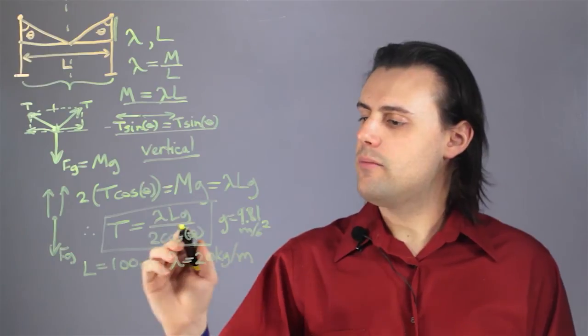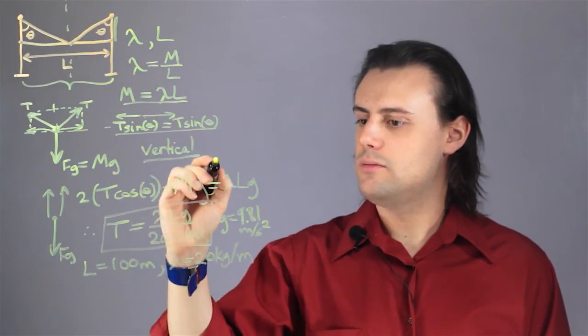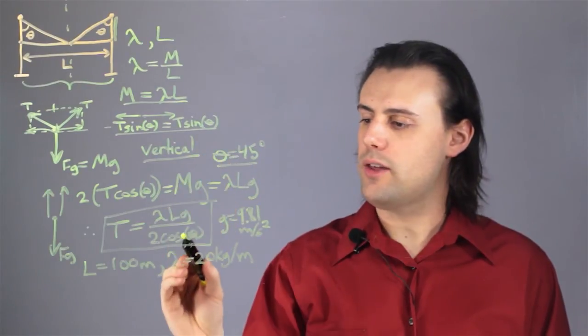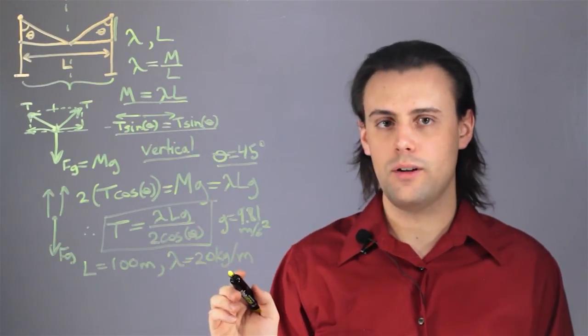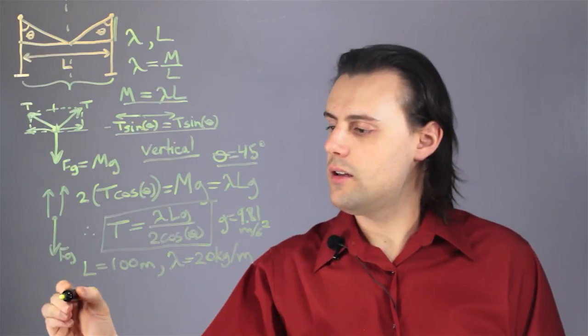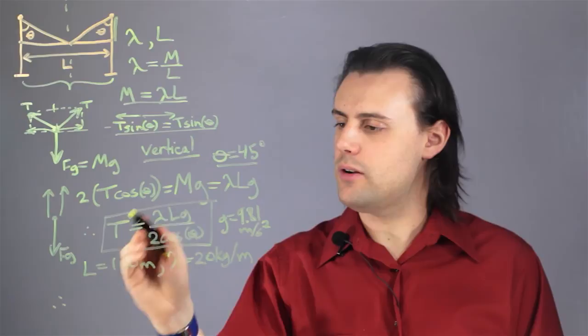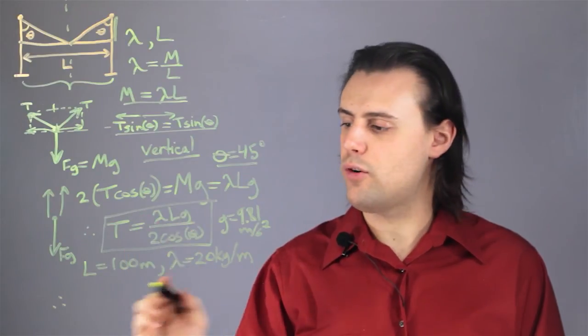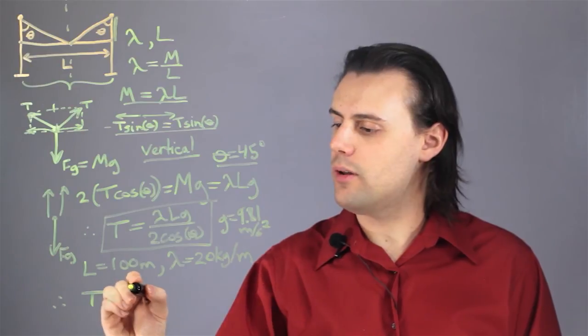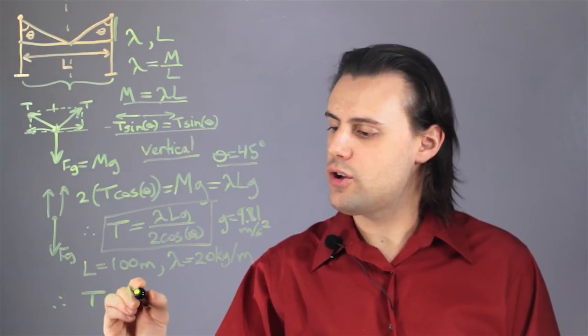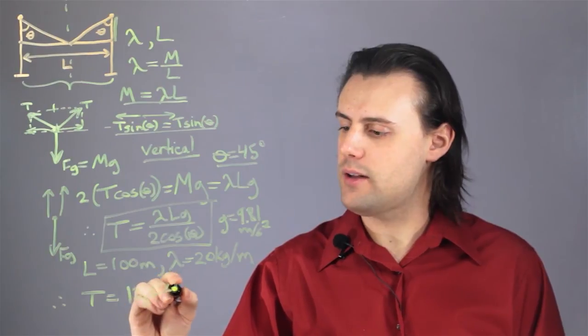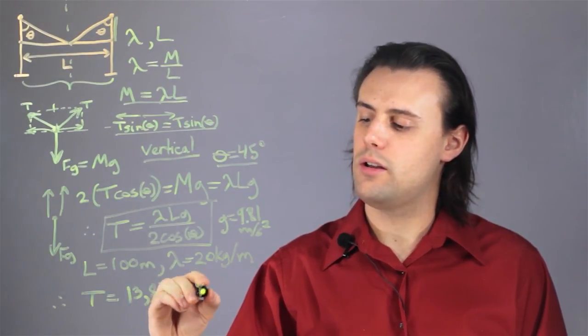Then, if I consider an angle theta being equal to 45 degrees, I know that cosine of 45 degrees is going to be 1 over the square root of 2. And when I plug in all these numbers into my derived formula, I end up with a tension equal approximately to 13,873.44 newtons.